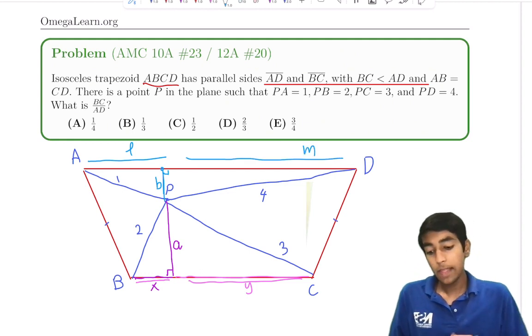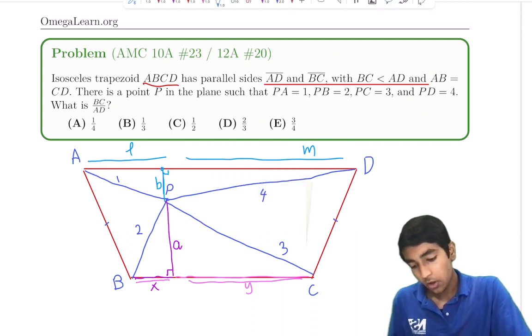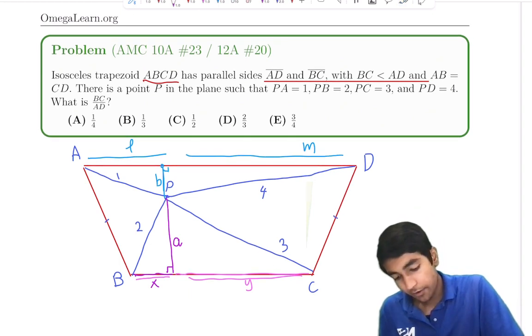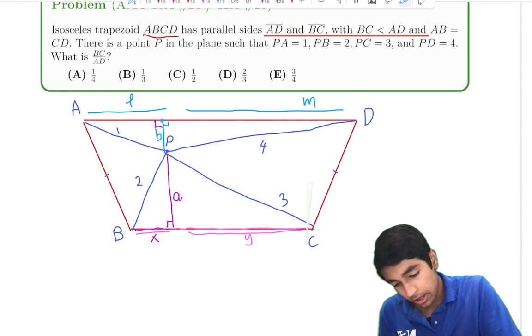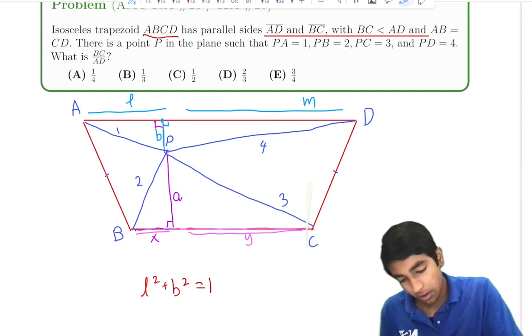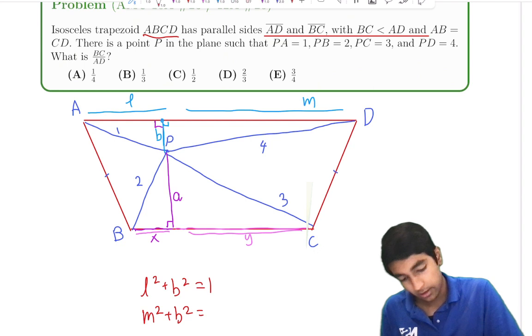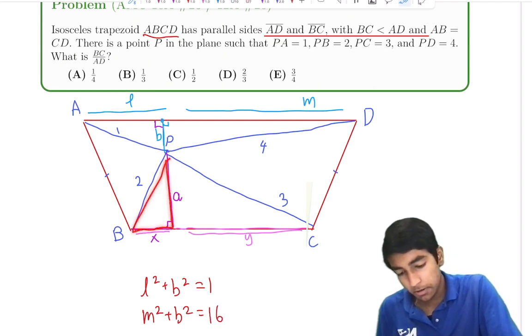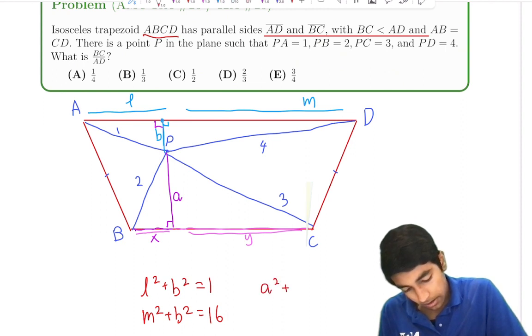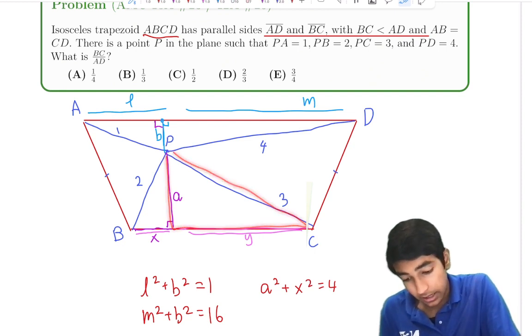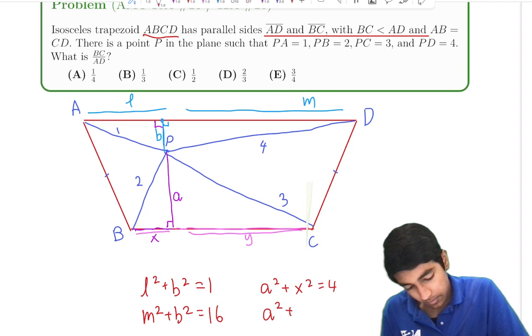So why do we drop altitudes? Well now we have a right triangle where we can use Pythagorean theorem. For this first triangle, we have L squared plus B squared equals 1. For the second triangle, we have M squared plus B squared equals 16. For this triangle over here, we have A squared plus X squared is 4. And for the triangle over here, we have A squared plus Y squared is 9.